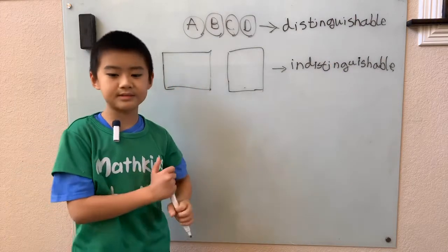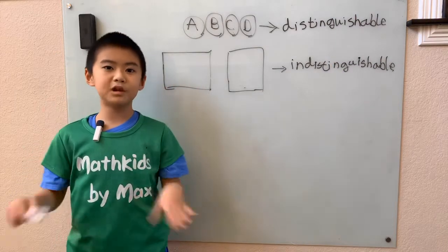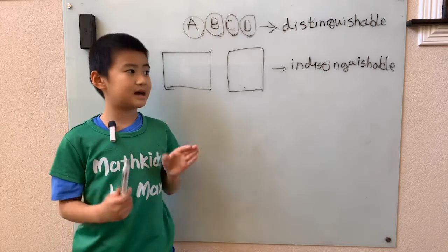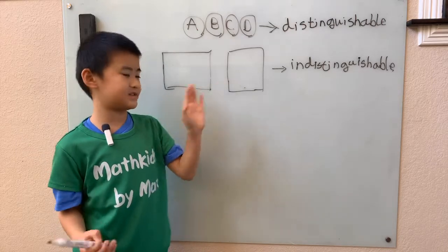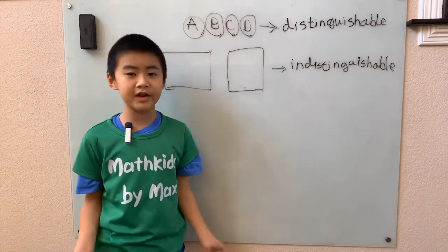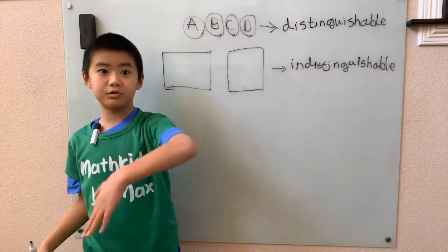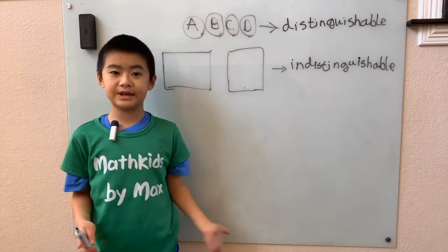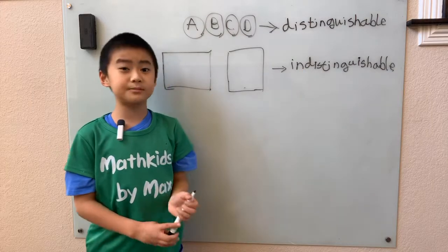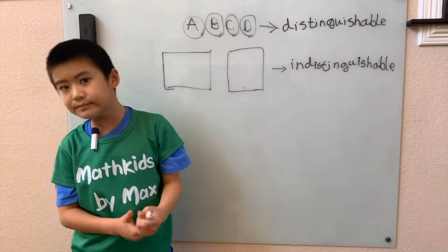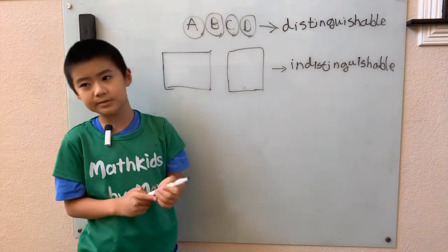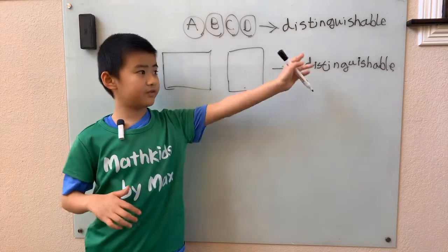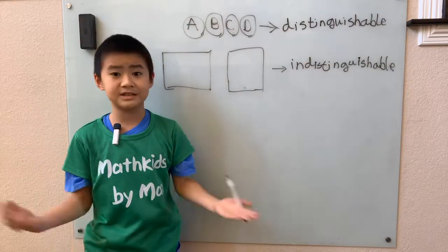Distinguishable just means they're completely different — they're two different things, we see them as different. We can't see them as the same thing, like how a diamond and a ruby are different, they're not the same thing. But indistinguishable — 'in' means 'not,' and 'distinguishable' means different — so indistinguishable means not different, meaning they're completely the same.